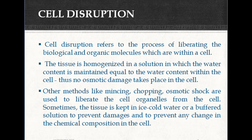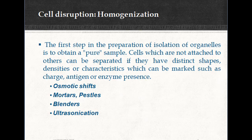The first step in the preparation of isolation of organelles is to obtain a pure sample. Cells which are not attached to others can be separated if they have distinct shape, densities, or characteristics which can be marked such as charge, antigen, or enzyme presence.